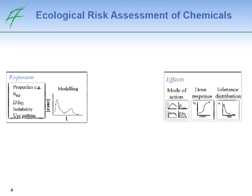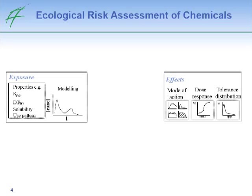In comparison to the exposure, you also characterize the effects — looking at the potential effects of a chemical on an aquatic system, either in a laboratory experiment or a field study. At the end of the day, you compare both the exposure and the effects side. As long as your exposure concentration in the field is lower than the concentration at which you expect unacceptable effects, your risk is low and you can assume the potential field effects are not unacceptable.